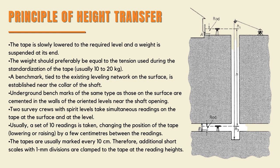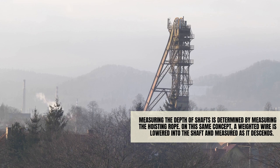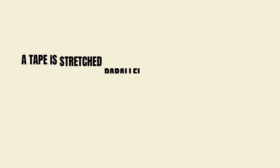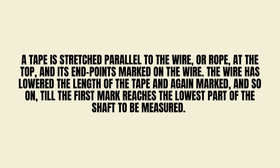Usually a set of 10 readings is taken, changing the position of the tape by a few centimeters between the readings. The tapes are usually marked every 10 centimeters; therefore, additional short scales with 1 mm divisions are clamped to the tape at the reading heights. Measuring the depth of shafts is determined by measuring the hoisting rope. On this same concept, a weighted wire is lowered into the shaft and measured as it descends. A tape is stretched parallel to the wire or rope at the top and its endpoints marked on the wire. The wire is lowered the length of the tape, again marked, and so on until the first mark reaches the lowest part of the shaft to be measured.